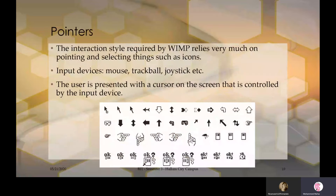Next: Pointers. Pointers are the most common way of interacting with a computer system. The interaction style required by WIMP relies very much on pointing and selecting things such as icons. We use a mouse, trackball, or joystick for pointers. The user is presented with a cursor on the screen controlled by the input device. Different types of cursors appear when using different programs.